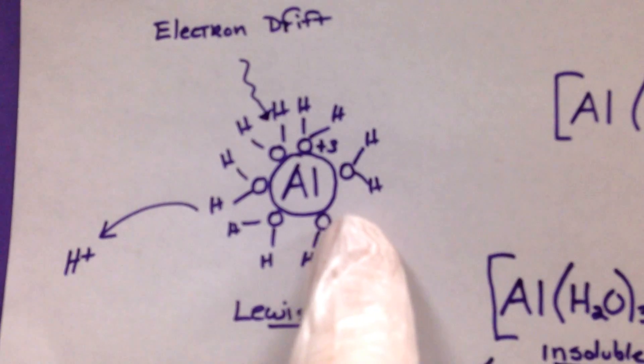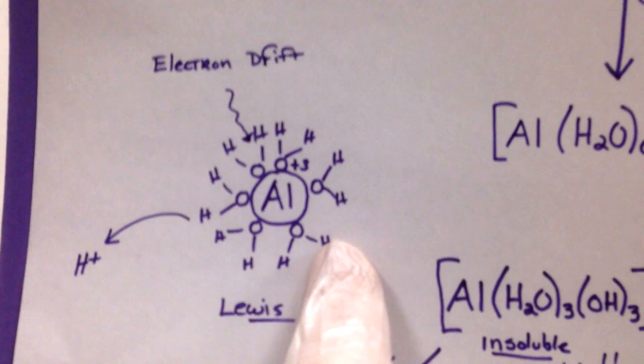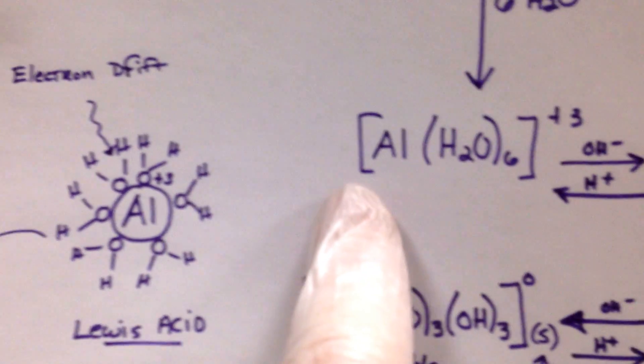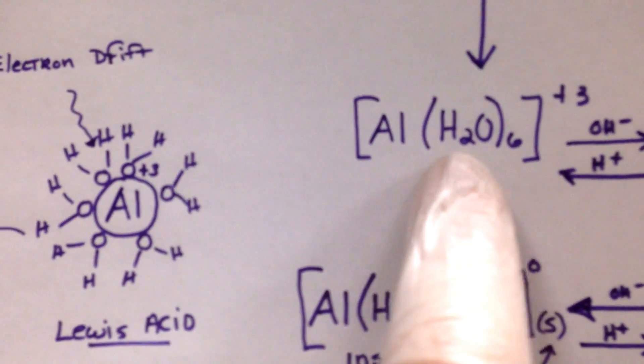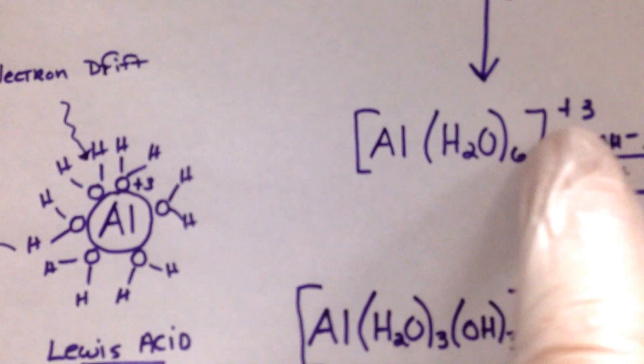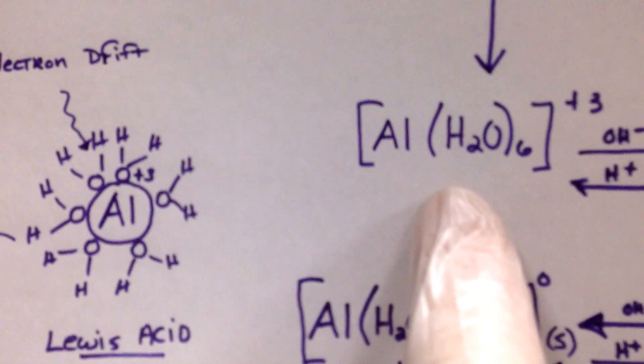Because we have six waters now surrounding it, we call this an octahedral complex. Six waters find a very stable octahedral position here, so we have aluminum with six water molecules surrounding it. The whole complex is still plus three because we have a plus three and six neutral molecules.